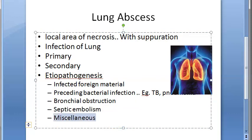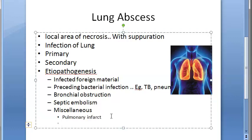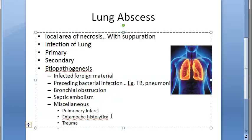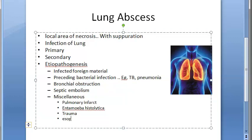There are also miscellaneous causes for lung abscess. Rarely, lung abscess may be due to pulmonary infarct leading to infection, then Entamoeba histolytica causing amoebic abscess, trauma to the lung, and direct extension from a suppurative focus in the mediastinum or esophagus — some infection from there extending directly into the lung.